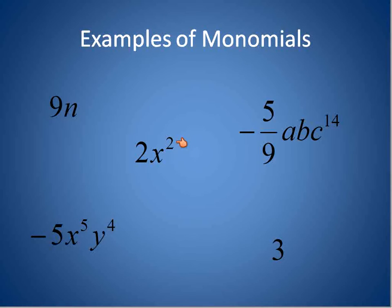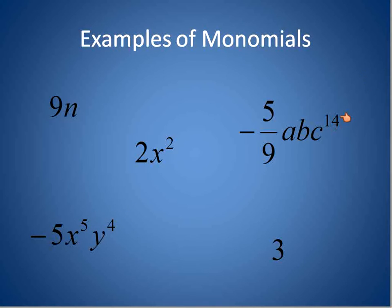The exponent has to be a whole number. It can't be a fraction, a decimal, or a negative for a monomial. The constant or coefficient — like negative 5 — that's fine. Negative 5 can be a negative, a fraction, or a decimal. These are fine as long as the exponents on the variables are whole numbers. So A·B·C to the power of 14: A has an exponent of 1, B has an implied exponent of 1, C has an exponent of 14 — that's fine. X to the power of 5, Y to the power of 4 — that's fine. This one has no variable — that's fine too.